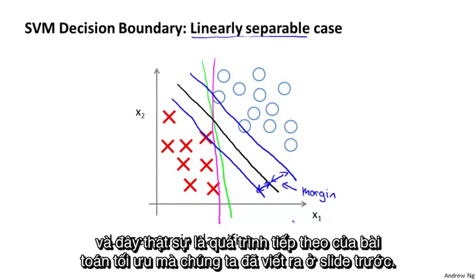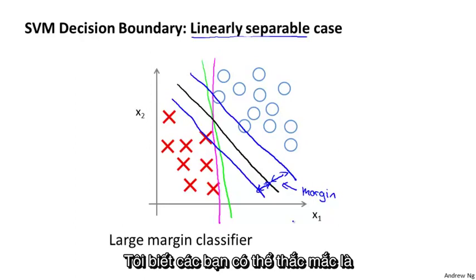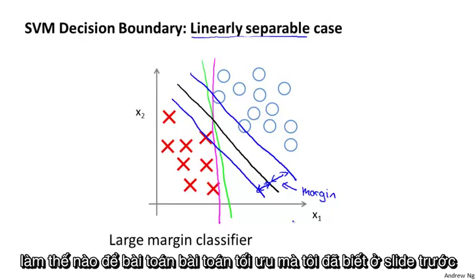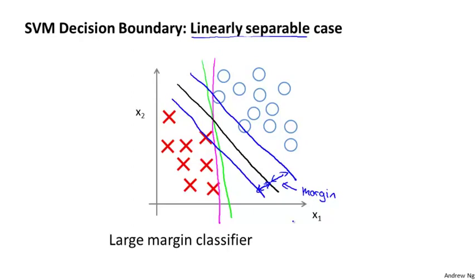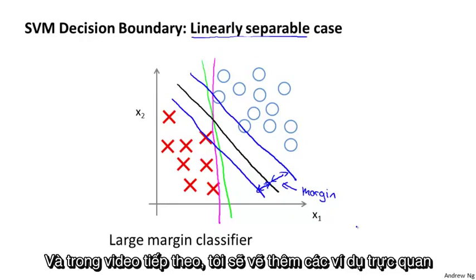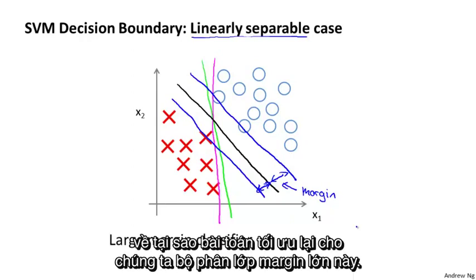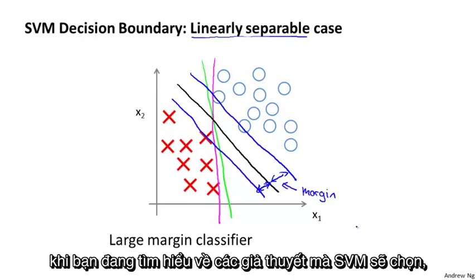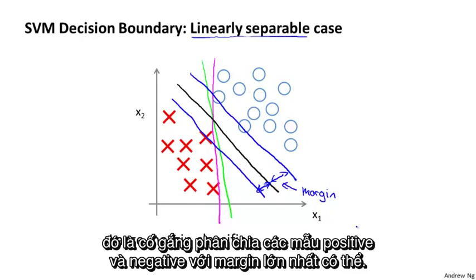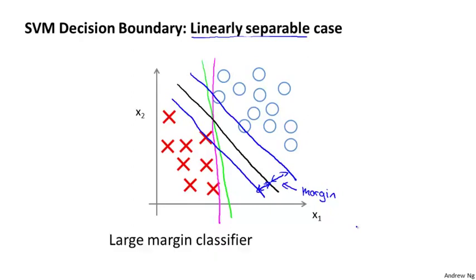This large margin result is a consequence of the optimization problem we wrote down. The SVM tries to separate the data with as large a margin as possible. In the next video, I'm going to sketch a bit of the intuition about why that optimization problem gives us this large margin classifier — this is a useful picture to keep in mind when thinking about the hypotheses an SVM will choose.